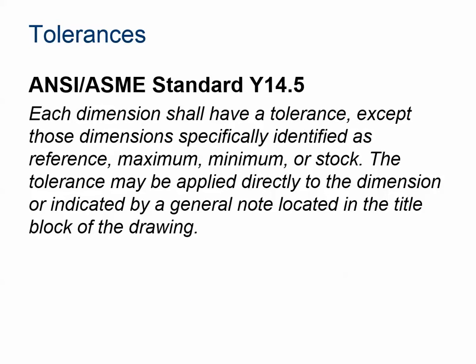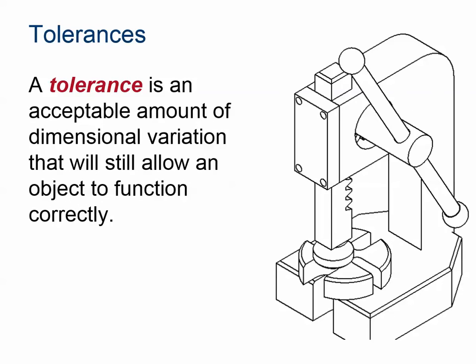Here's a copy of the actual tolerance standards. As a reminder, you can find this presentation on the LMS and download and watch it at your leisure, but obviously the video provides commentary. It is specified here — this is the ANSI standard — that each dimension on a sketch will have a tolerance, be it specific or general, and we'll talk about the difference between those two in just a second. Here's the official definition for tolerance: a tolerance is an acceptable amount of dimensional variation that will still allow an object to function correctly.